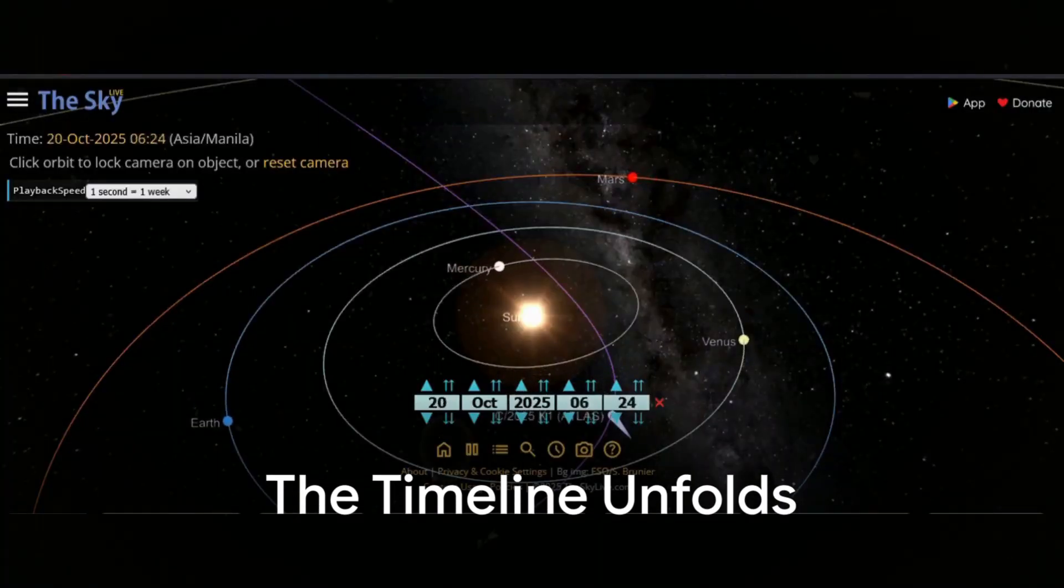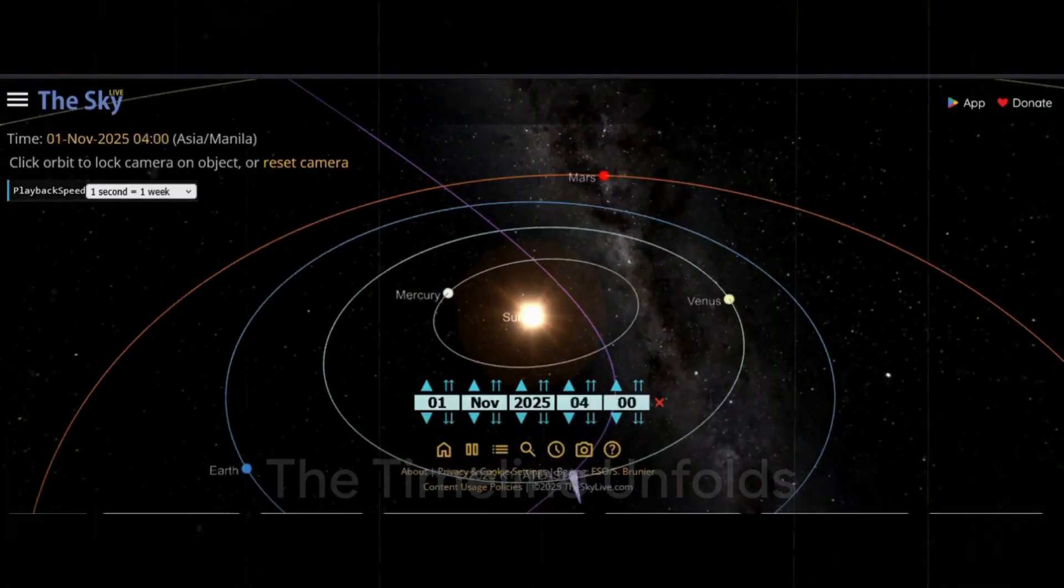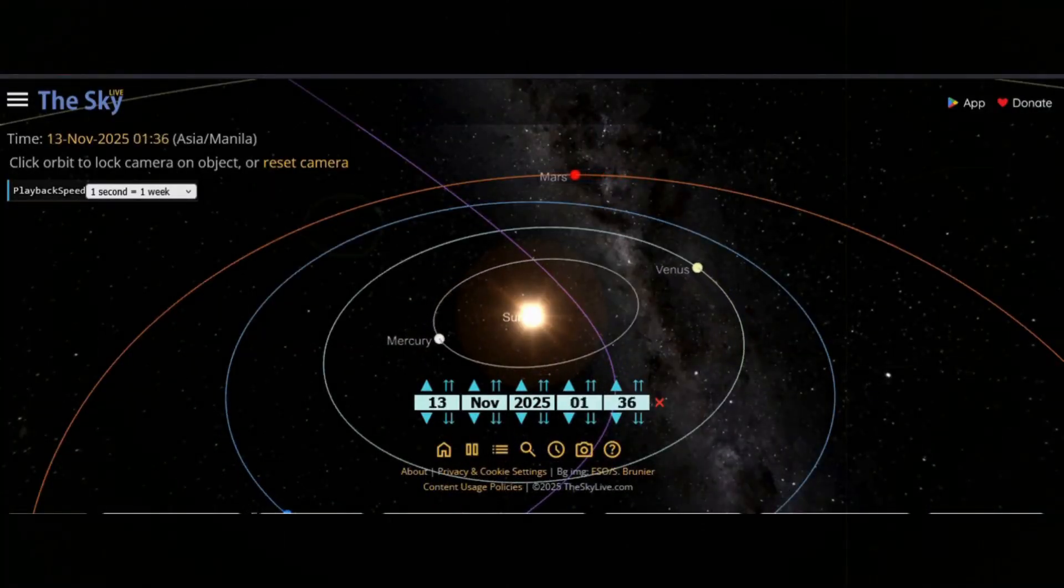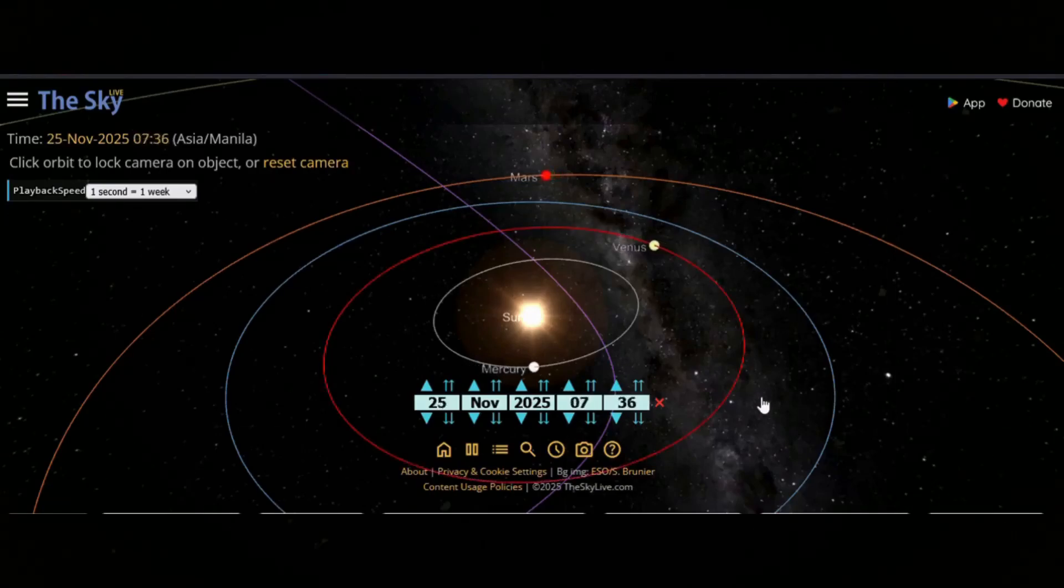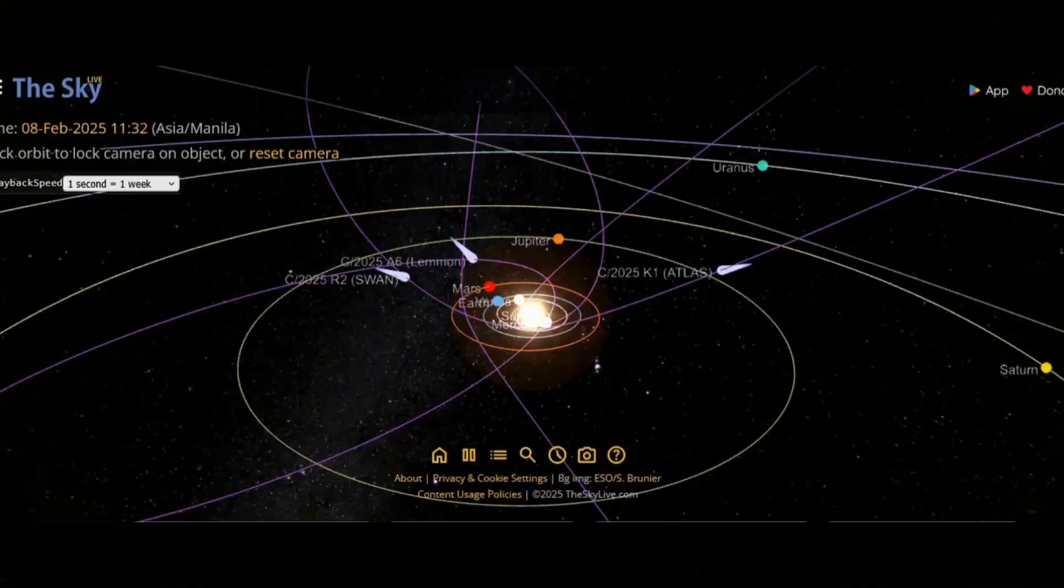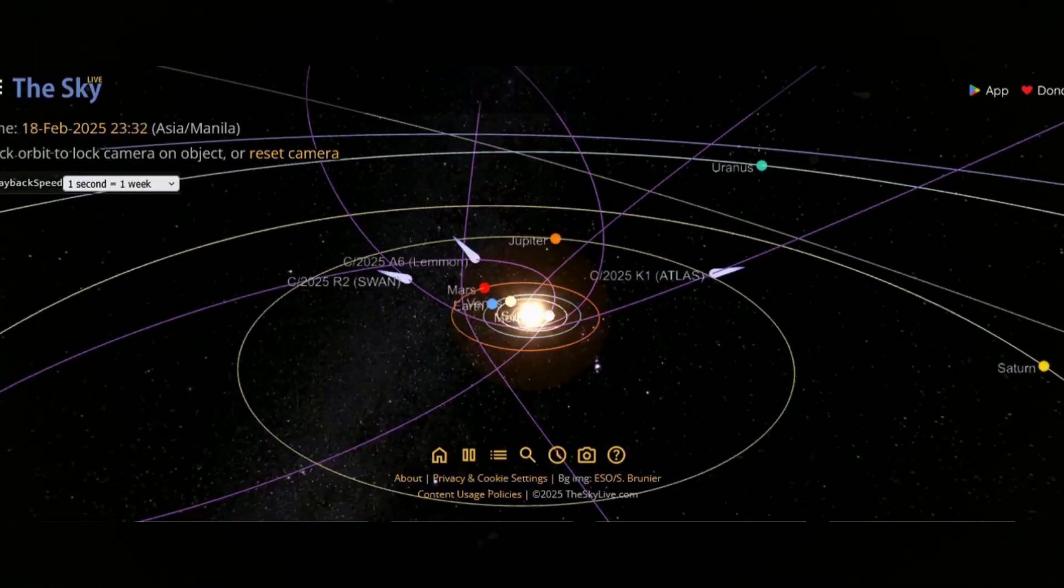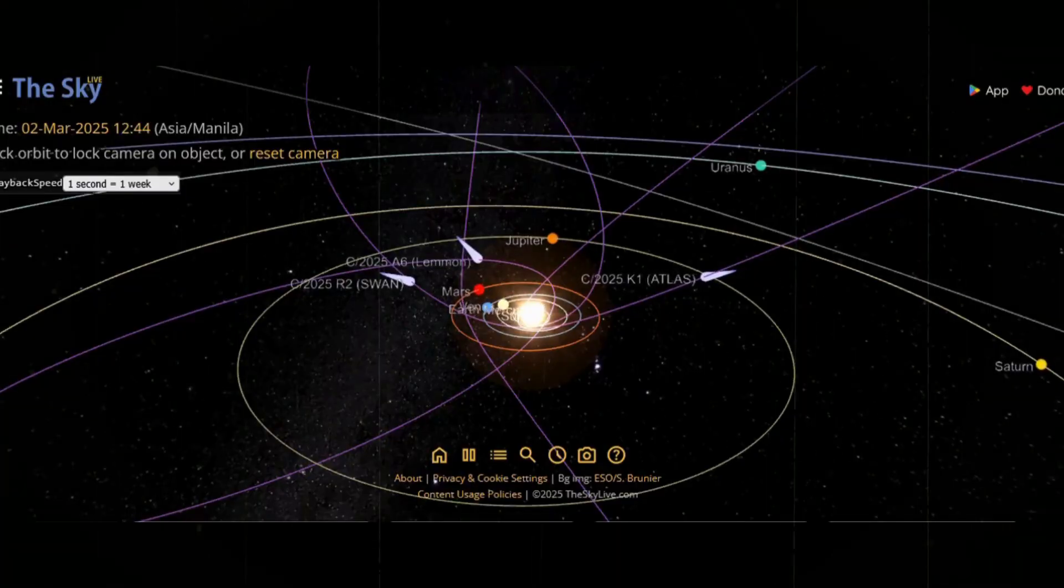October will be a month of shadows and alignments. 3i Atlas will vanish behind the sun, a giant ghost hidden from human eyes, while another comet slides past Earth at a mere fraction of the distance to the sun.